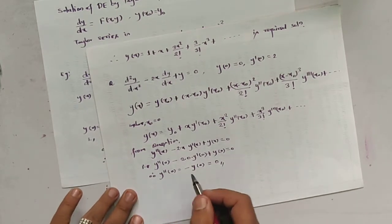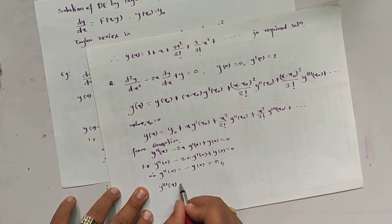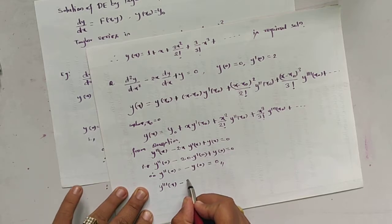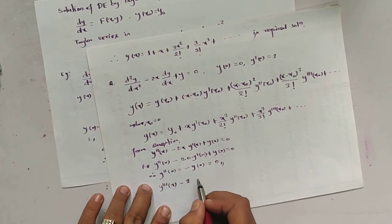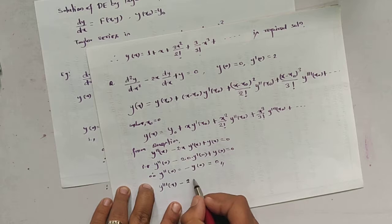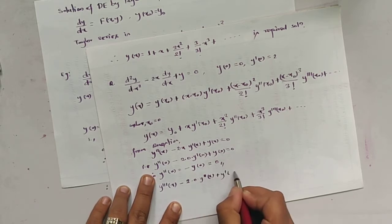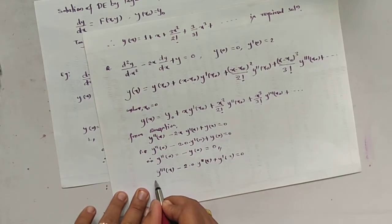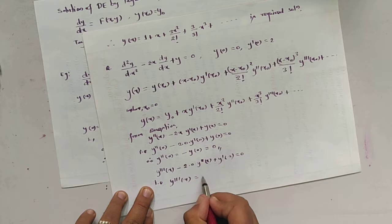Similarly, taking the derivative of the equation, it becomes y'''(x) − 2(0)·y''(x) − 2·y'(x) + y'(x) = 0. After substituting x = 0, we get y'''(0) = 2·y'(0) = 2(1) = 2. So y'''(0) = 2.